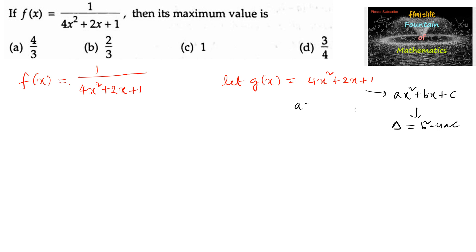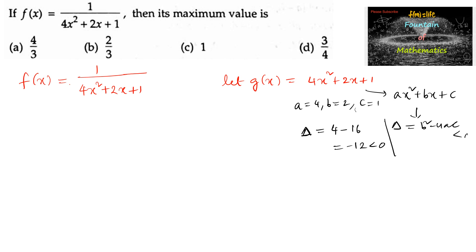Here we can say a is equal to 4, b is equal to 2, c is equal to 1. So the discriminant value for this quadratic expression is b² — that is 2² — minus 4 into 4, which is 4 minus 16, equal to minus 12, which is less than 0. So the discriminant is less than 0.